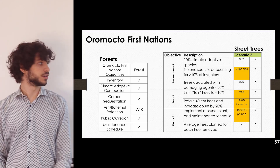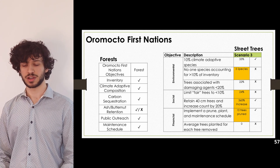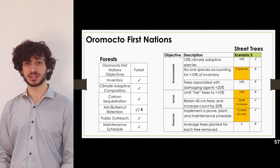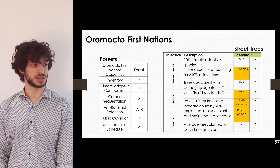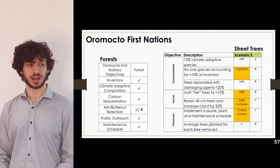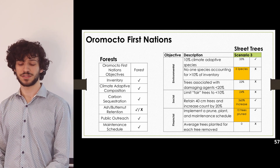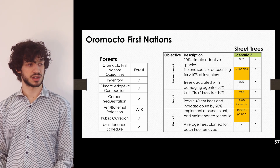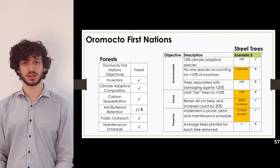For Oromocto First Nations: the forest hits all objectives except ash retention, as emerald ash borer is now an inevitability. EAB treatment with TreeAzin is fully recommended. Scenario 1 is our recommendation, so no forest treatments are required. For street trees, focus on pruning and enhancing the forest, possibly with additional planting to increase diversity. Both the orphan forest and street trees should have an inventory every five years and a monitoring plan in place.